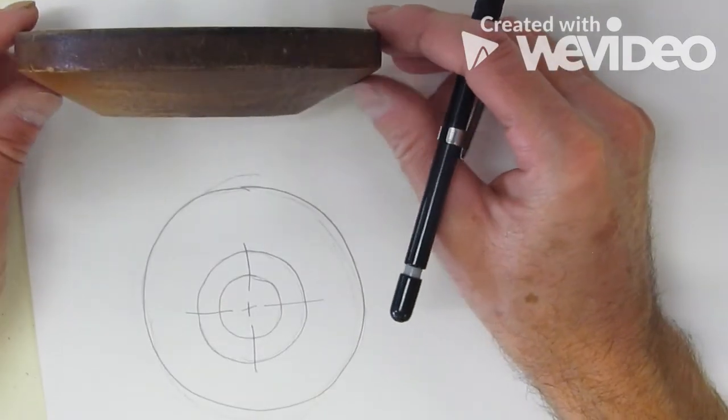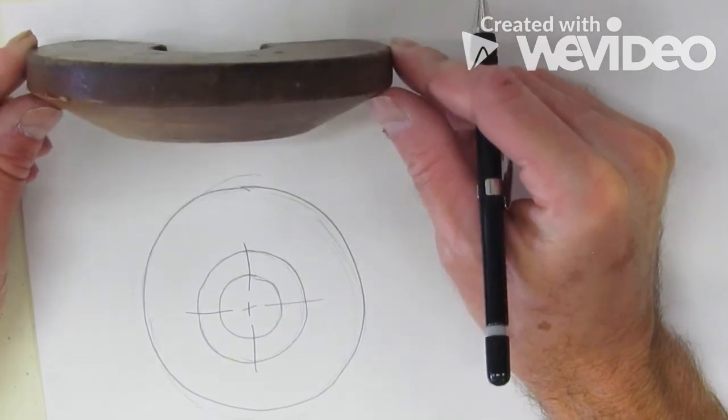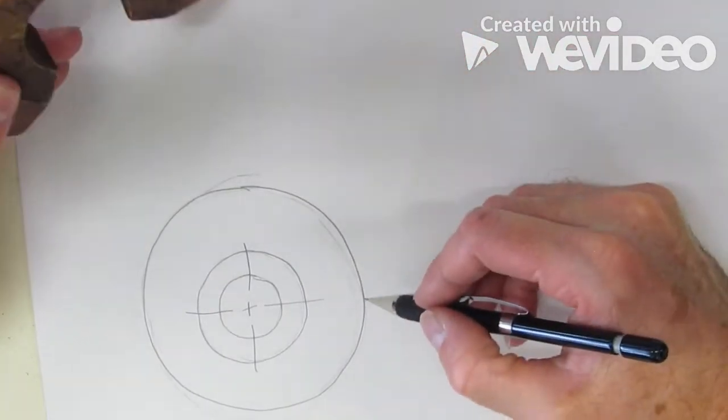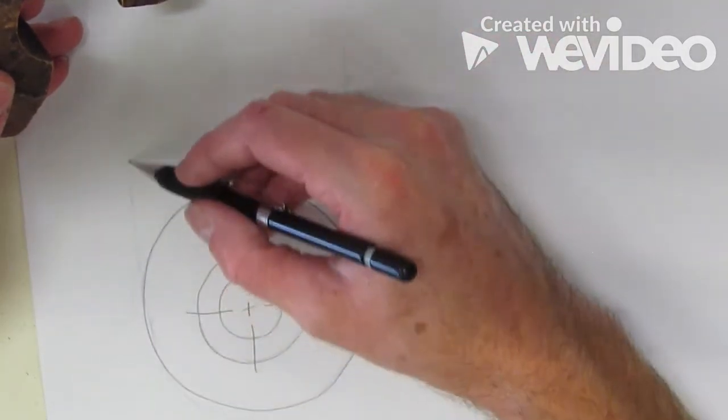So notice what this does. It tapers where my thumbs are and it's square where my index fingers are. So we need to get that. To do that, we can still project. We're going to come tangent off this. Remember, that's just kissing the circle. Come off this side tangent.